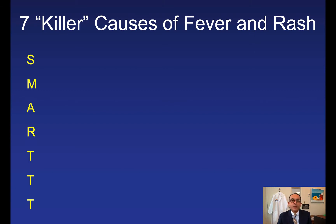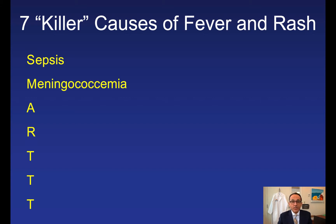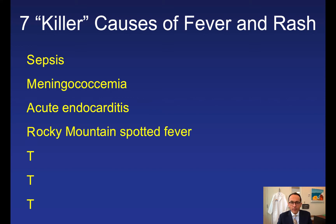If a patient presents with fever and a rash, the mnemonic SMART can be helpful for remembering the seven killer causes. Sepsis is one cause. Second is meningococcemia, especially when you see a patient developing petechiae. Acute endocarditis can also give fever and rash — again, petechiae should raise concern. Rocky Mountain spotted fever is a rickettsial disease; usually three to five days after a flu-like illness, patients develop a rash starting at the ankles and wrists that spreads centrally and can turn into petechiae.